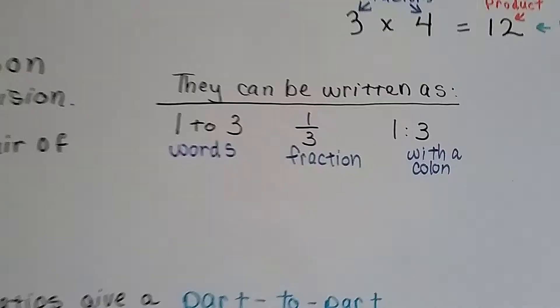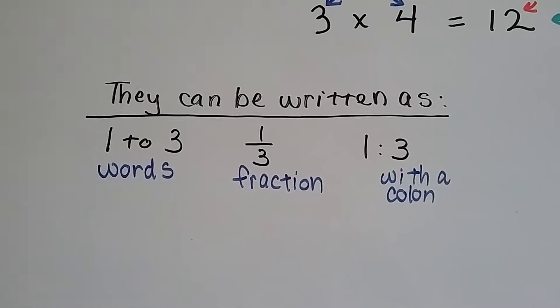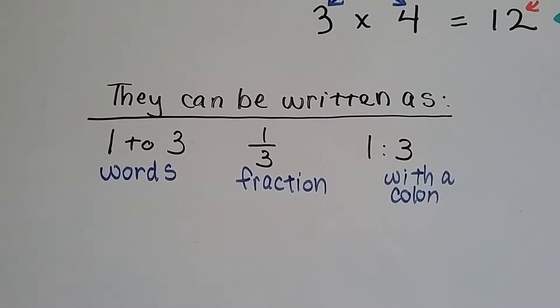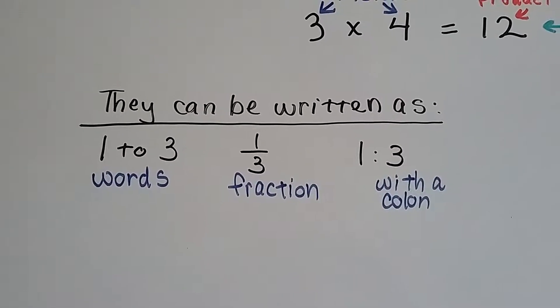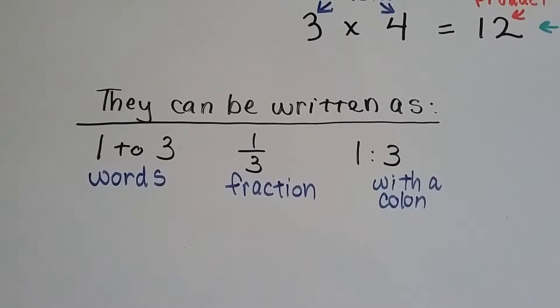As I said before, they can be written in three ways: as words like one to three, as a fraction one over three or one-third, or with a colon in the middle and it would be read as one to three. The colon would be read as the word two, t-o.